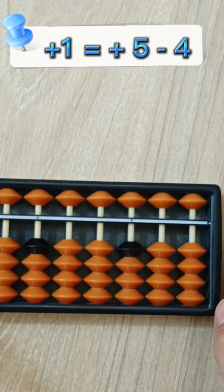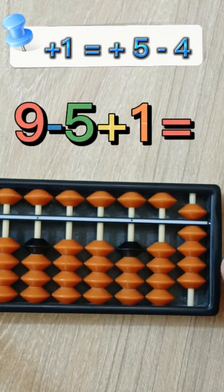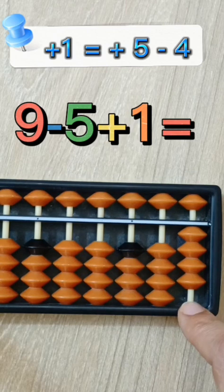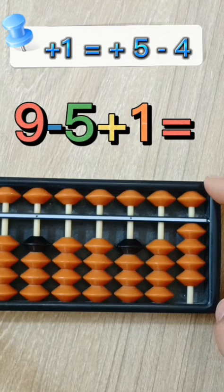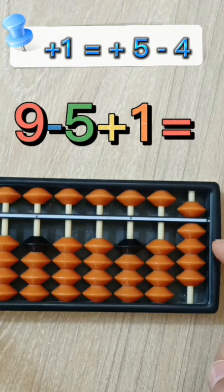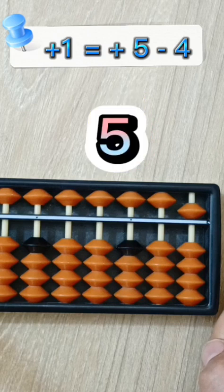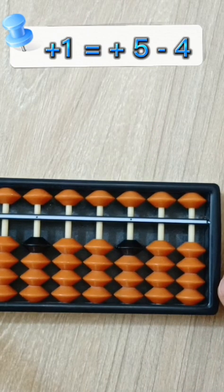For example, 9 minus 5 plus 1. I need to put 1 here, but I don't have enough beads. So, what should I do now? Respect number 5. Slide 5 down. After that, subtract the complement to the number 1 or friend of number 1. It's 4. 5 minus 4. Okay, next.